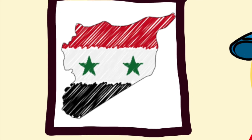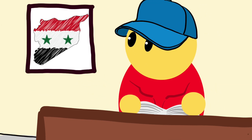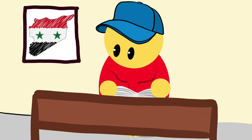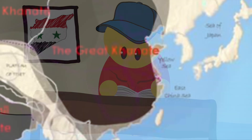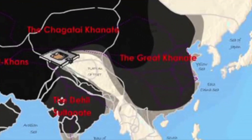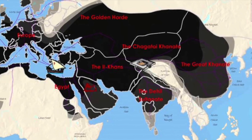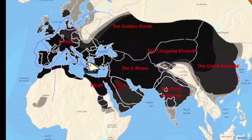Ibn al-Wardy, a Syrian writer who would later die of the plague himself in 1348, recorded that the Black Death came out of the Land of Darkness, or Central Asia. From there, it spread to China, India, the Caspian Sea, and the Land of Uzbeks, and then to Persia and the Mediterranean.